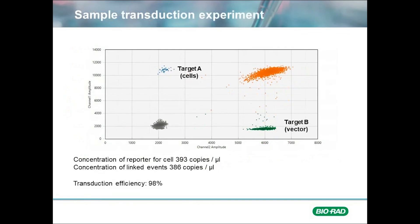In this sample analysis, we are using linkage to determine the transduction levels of an AAV in cells. We can quantify the amounts of each target and the level of linkage that is occurring. A reporter target A is used to count cells, and a reporter target B is used to count the vector. In this sample, linkage analysis tells us that 98% of our cells incorporated the reporter region of our virus.